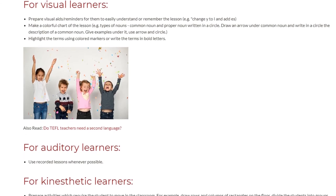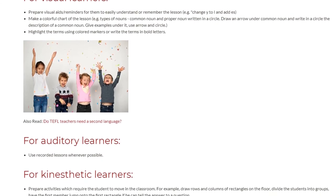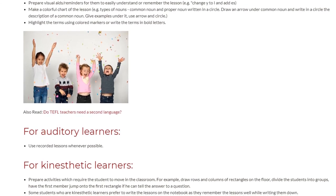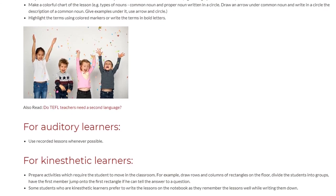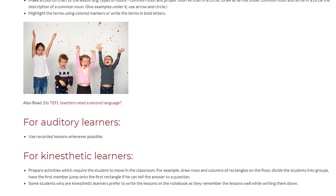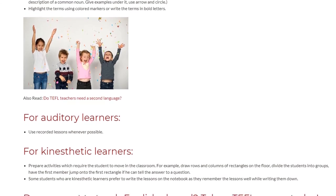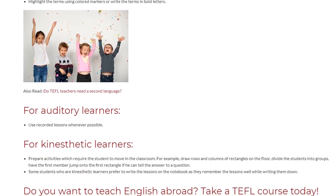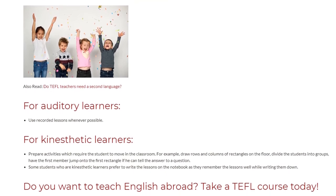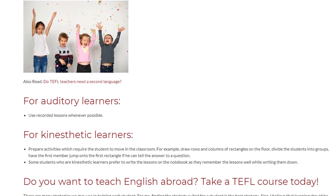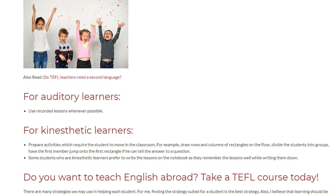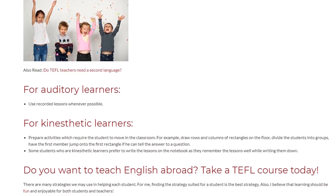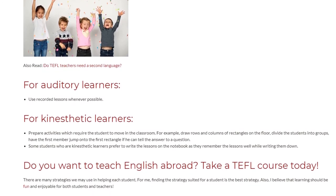For kinesthetic learners: prepare activities which require the student to move in the classroom. For example, draw rows and columns of rectangles on the floor, divide the students into groups, and have the first member jump onto the first rectangle if he can tell the answer to a question. Some students who are kinesthetic learners also prefer to write lessons in a notebook, as they remember the lessons well while writing them down.